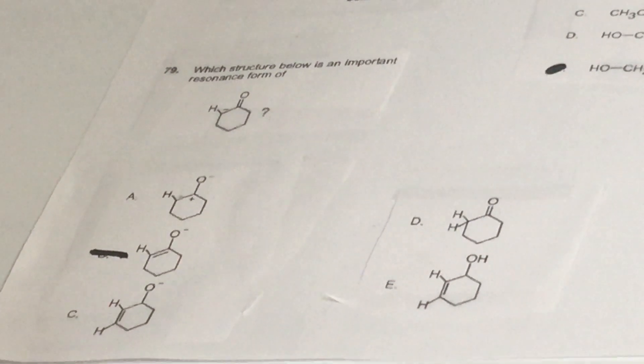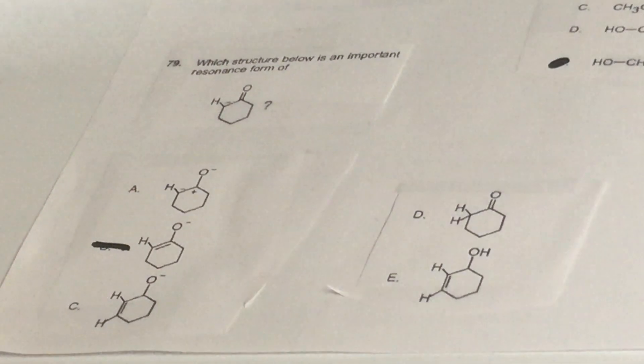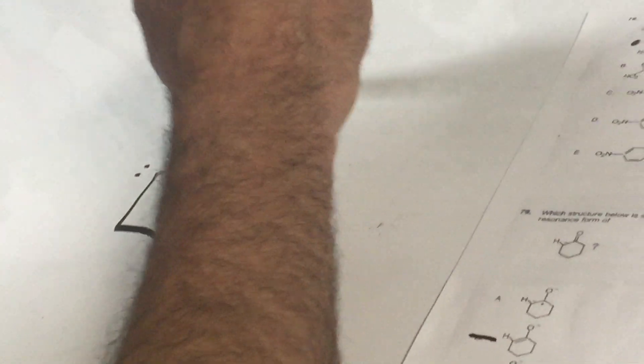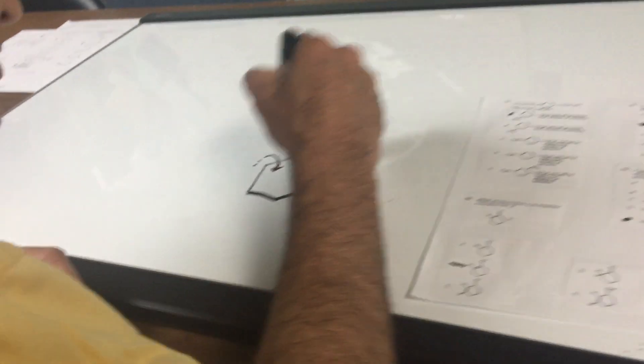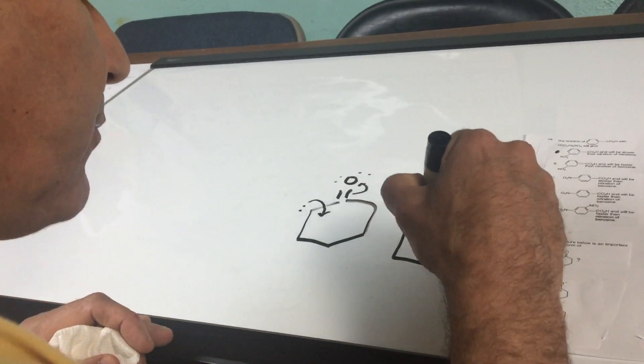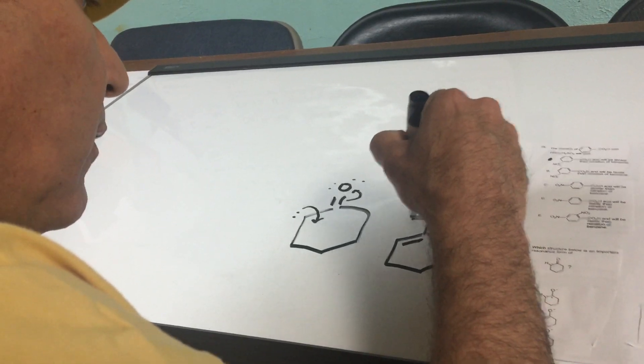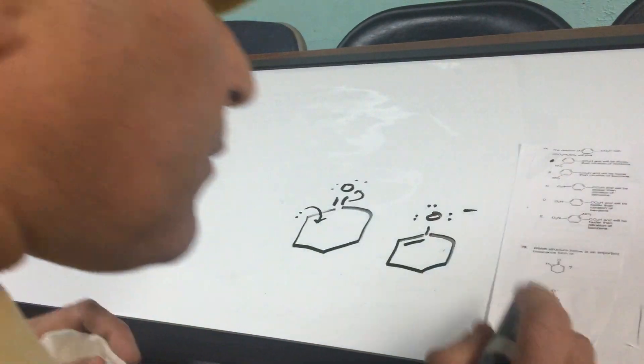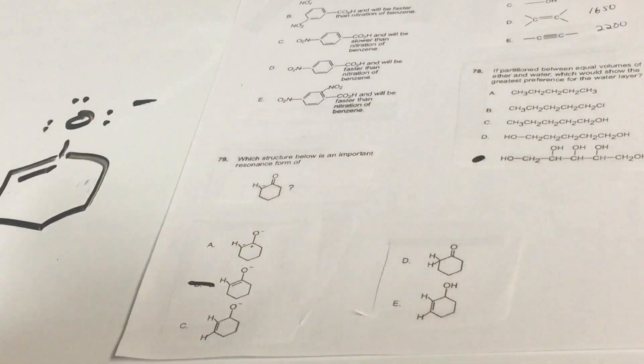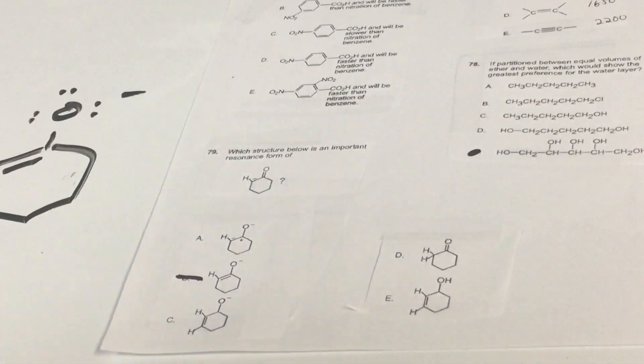79, which is a resonance form of this. Well, if you go off to the side, in resonance, all we're going to be doing is moving the electrons. Okay, I'm not going to put that little hydrogen in for clarity. And as you can see, watch the movement, two movements. One steps in and one steps out. And that would give me this. And that would be choice B. Very easy. Now, when you get to the destroyer book, you'll see much more challenging questions than that.